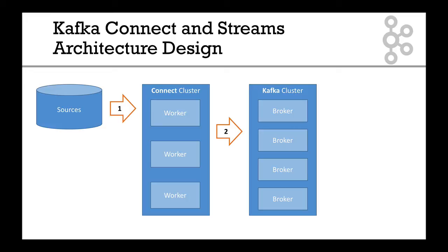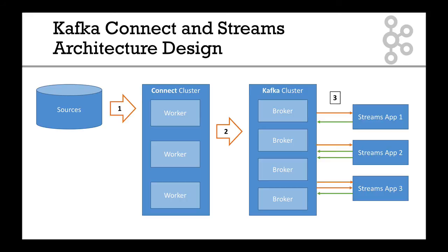In the third step, you may want to transform that data — do some transformation, aggregation, some joins, and so on. That's why you have a Streams application, or your Streams API. This is not covered in this course, but here it is. In the third step, your Streams API exchanges your data in and out of Kafka.